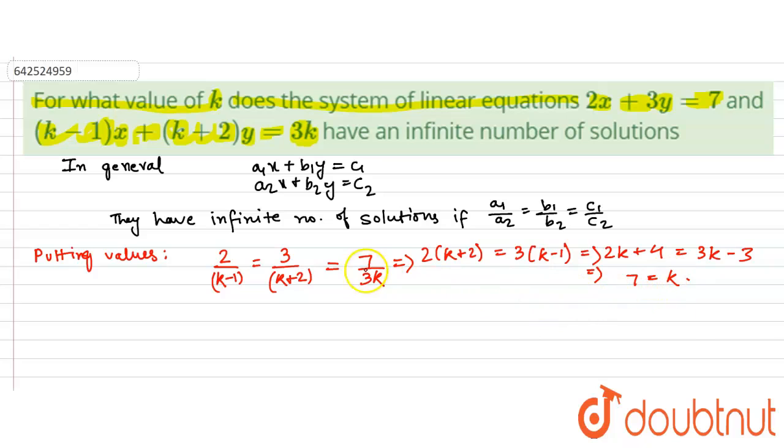Let's just see if the last equality also holds for k equals 7. Now for k equals 7, if we just put here we would get 3 by 7 plus 2, which is 9, equals 7 by 3 into 7. This gives us 1 by 3 equals 1 by 3, which is true.